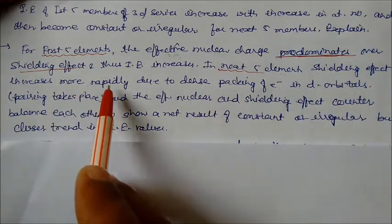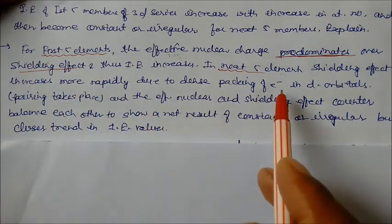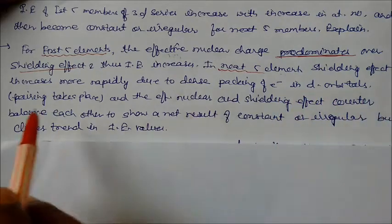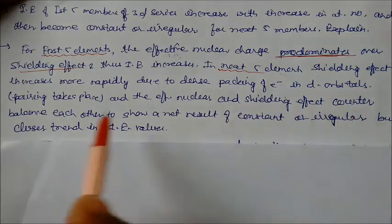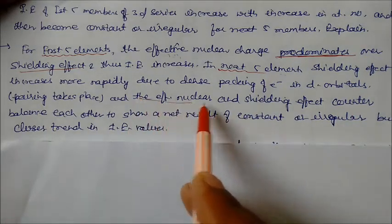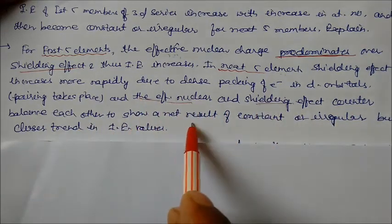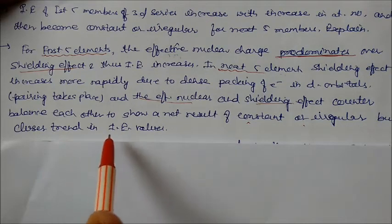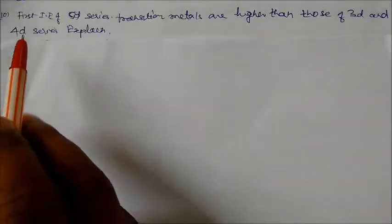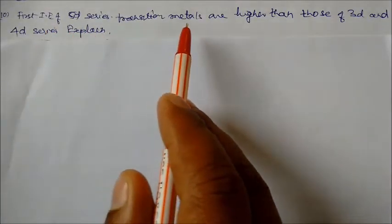In next five elements the shielding effect increases more rapidly due to the dense packing of electrons in d orbitals. That is, pairing takes place and the effective nuclear charge and shielding effect counterbalance each other to show a net result of constant or irregular, but close trends in ionization energy values.